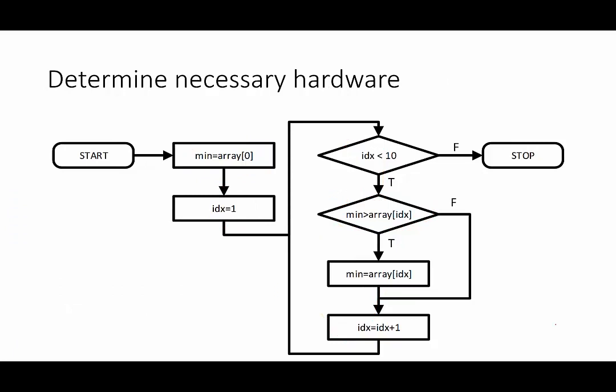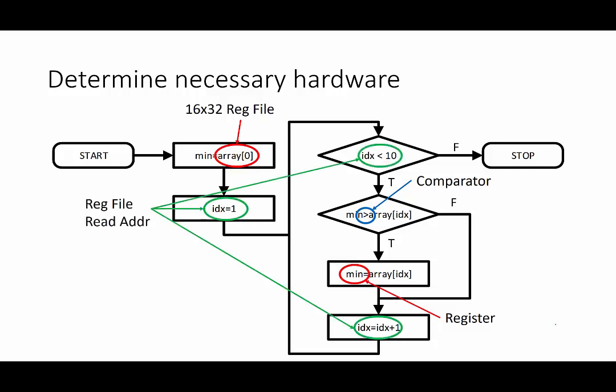Now that we have modeled our program flow, we can discover what components we might need in the data path. First, we'll need a 32-bit comparator to compare integers. Second, we will need a 32-bit register for the minimum value. Third, we'll need a register file that can store at least 10 integers for our array. The address that we will read from for this array will be determined by our state machine. Finally, we will need to selectively choose when we load a value from the array into min. Since we are selecting between several behaviors, we can use a multiplexer to choose which behavior we're going to choose.